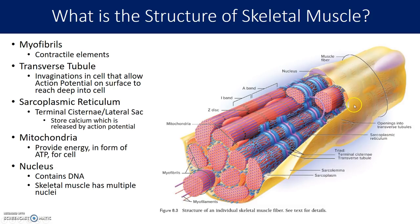In a muscle fiber you also have transverse tubules. You can see these little openings for transverse tubules — they're like invaginations in the muscle cell, kind of like when you poke your finger into a balloon. These transverse tubules are technically still the outside of the cell but they perforate into the interior, kind of like the holes in Swiss cheese. They transmit action potentials deep into the muscle fiber.